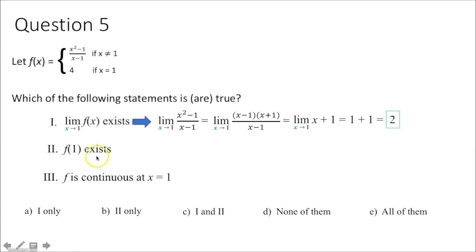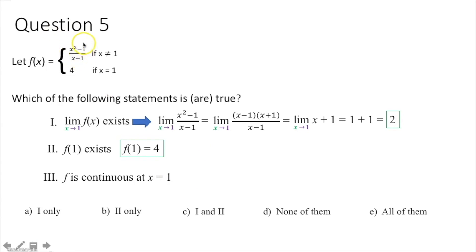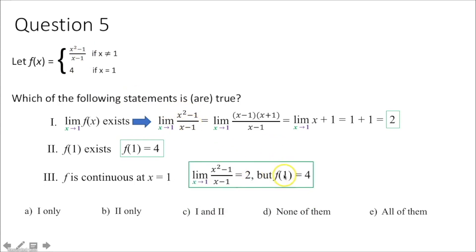Statement 2: does f of 1 exist? The piecewise function defines f of 1 equals 4 when x equals 1, so yes, f of 1 exists. Statement 3: is f continuous at x equals 1? For continuity, the limit must equal the function value. The limit as x approaches 1 equals 2, but f of 1 equals 4. These are not equal, so there's a hole with a separate point above it — f is not continuous at x equals 1. Therefore only statements 1 and 2 are true.